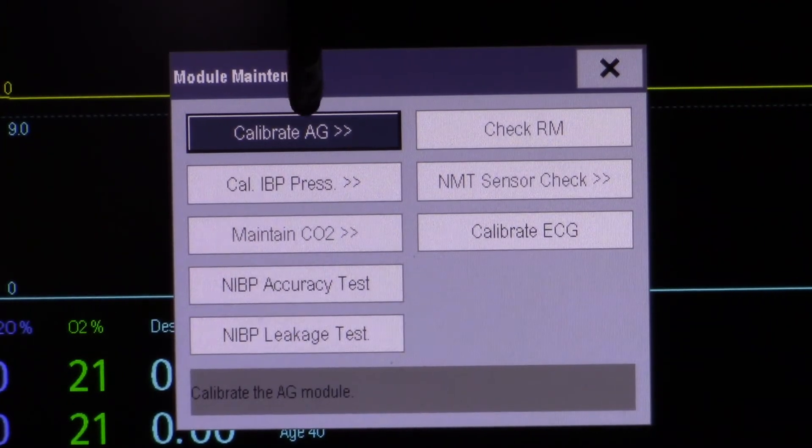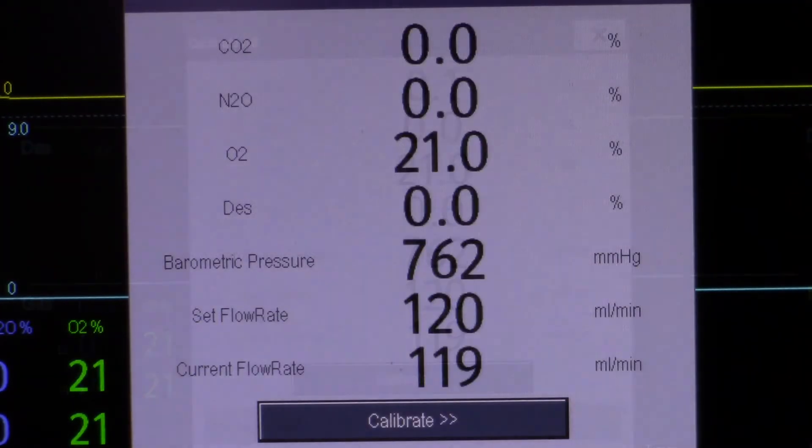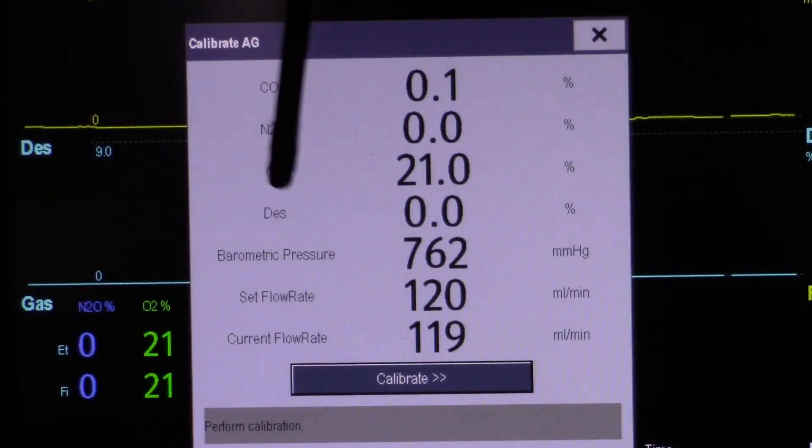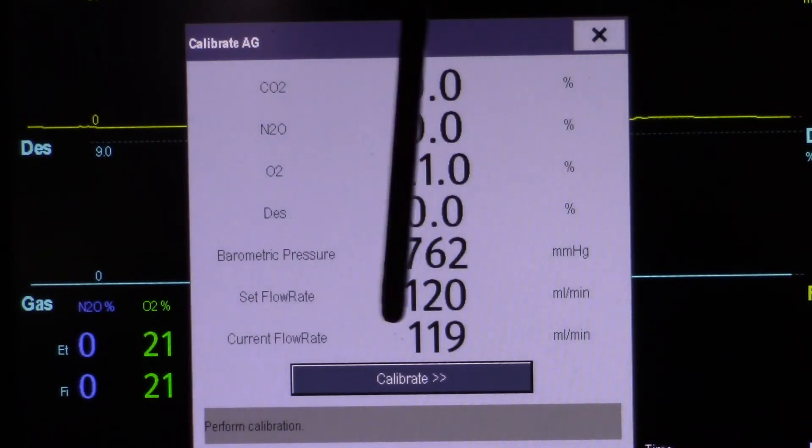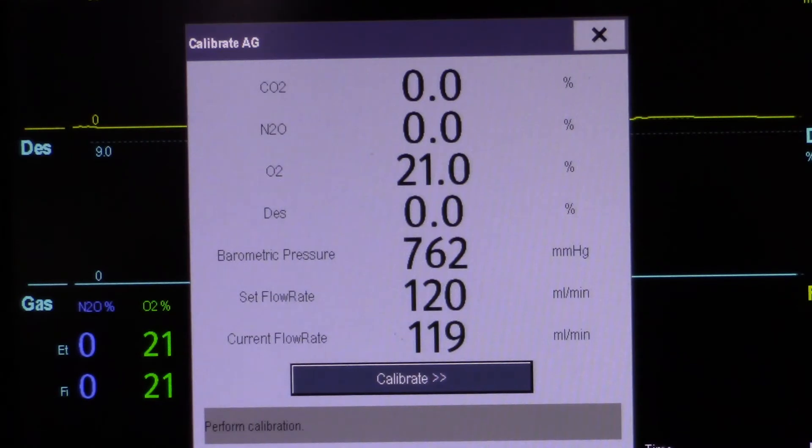Select Calibrate AG. Verify that your set flow rate is approximately equal to the current flow rate. Touch Calibrate.